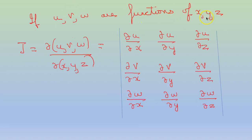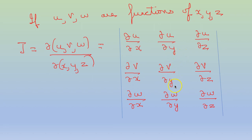If u, v, w are functions of x, y, z, where f is a function of u, v, w, then the Jacobian of f will be: the first column will be del u by del x, del v by del x, del w by del x. That is the first column is partial derivative with respect to x, the second column is partial derivative with respect to y, and the third column is partial derivative with respect to z.